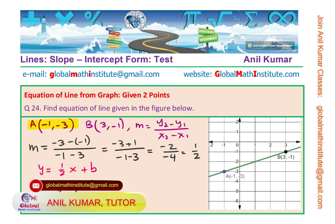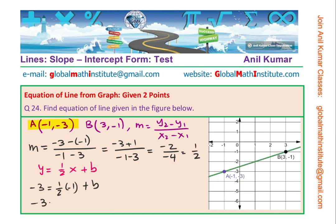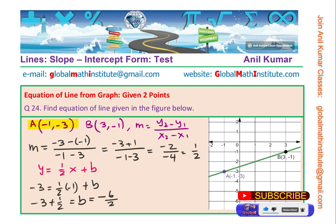So we can now find the value of B as minus 3 plus half, which is minus 6 over 2 plus half, which equals to minus 5 over 2.